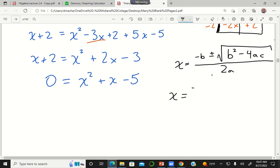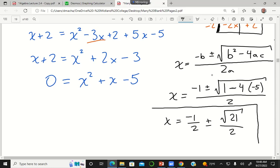For me, b is 1. A is just 1, and c is negative 5. So this is 4 times negative 5. 1 plus 20 is 21. And these are your two solutions to the equation.